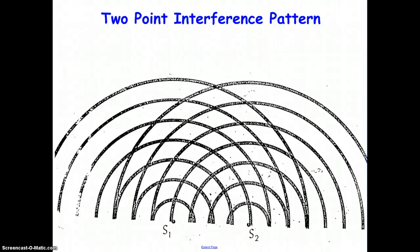Welcome to the waves and sound lesson on the two-point interference pattern. You're going to need this diagram that was handed out in class today. On this diagram, what's important to note is that S1 is the first source of waves, and S2 is a second point source of waves.